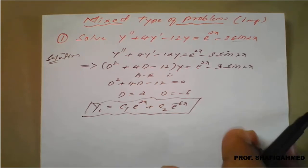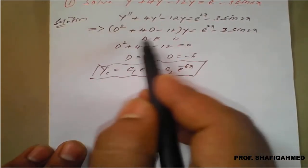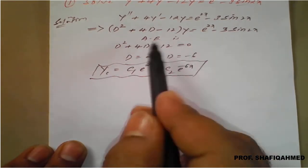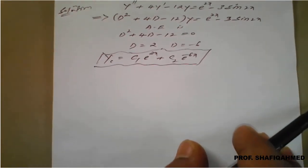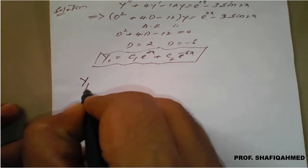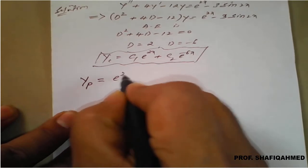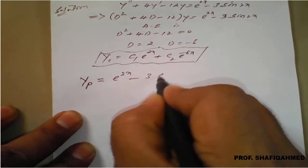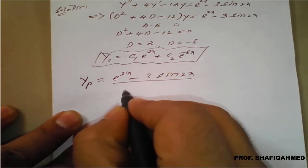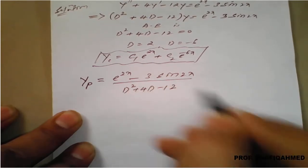Now, I will not again do explanation for the left hand side. For the left hand side, use the auxiliary equation to find the roots and the complementary function. Given the detail, just glance it and complete that concept.